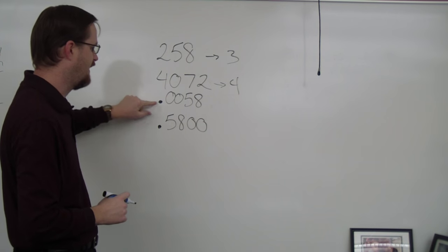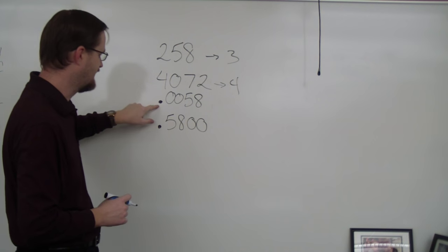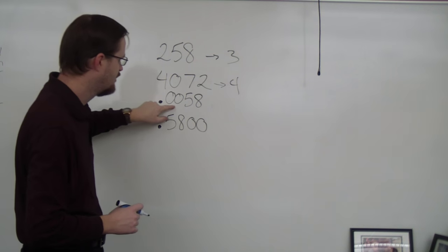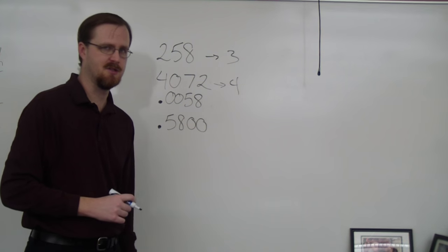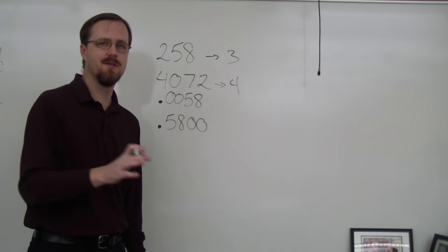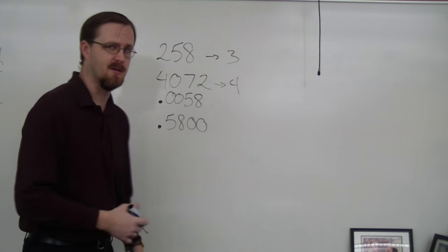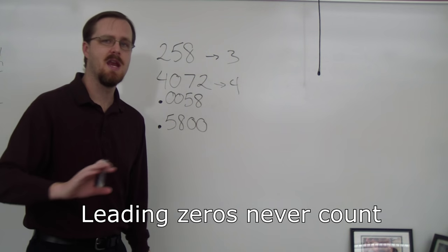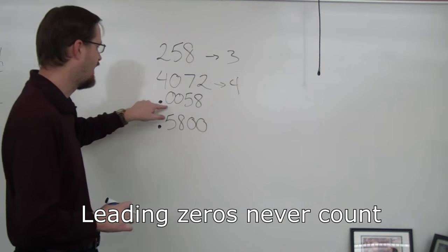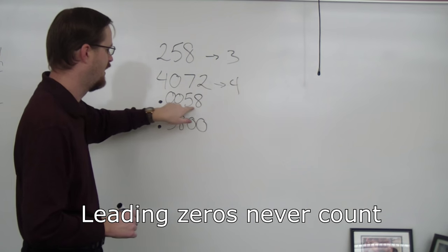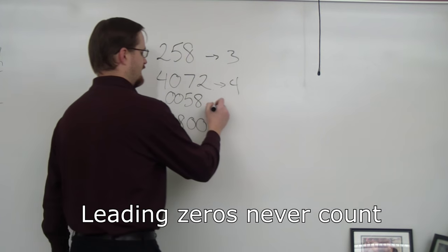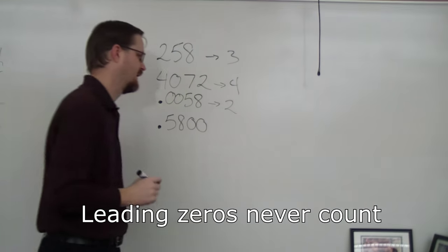This number right here has a decimal and then two zeros at the front of a number followed by the non-zero digits. All zeros in the front, which are called leading zeros, leading zeros never count. So I cannot count those two zeros. So I'm only going to count one, two. So this number has two sig figs.